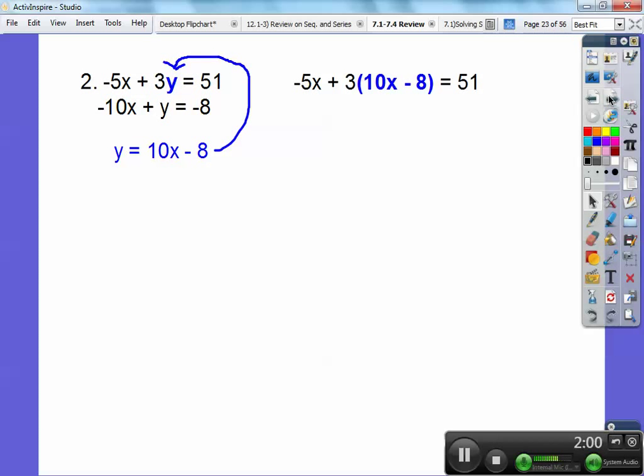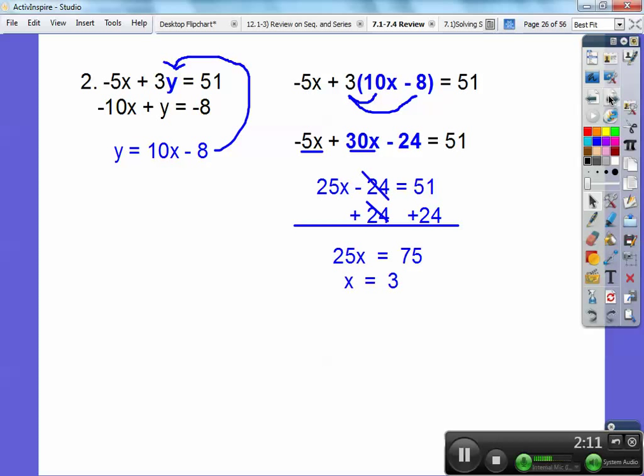And I'm going to go ahead and put the three through the parentheses and get 30x minus 24. And then combine negative 5x plus 30x is 25x. Then I'm going to add 24 to both sides and I get 75 and 25 goes into 75 three times.